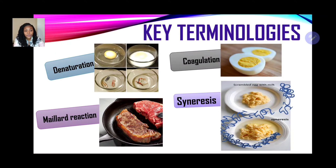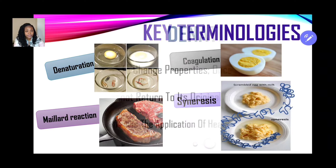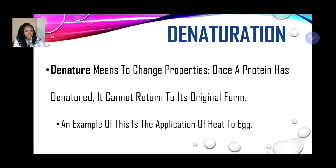The four main key terminologies we're looking at are: denaturation, Maillard reaction, coagulation, and syneresis. Looking at the definitions — denaturation means to change properties. Once a protein has denatured, it cannot return to its original form.